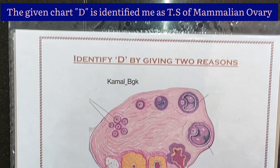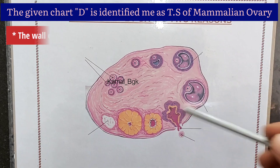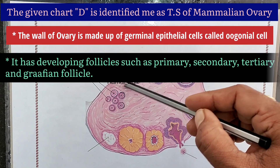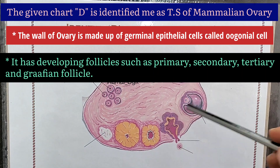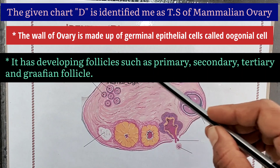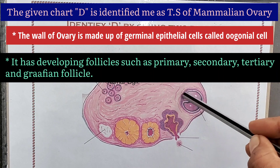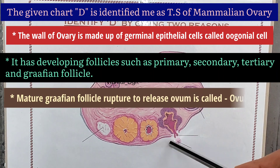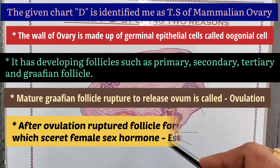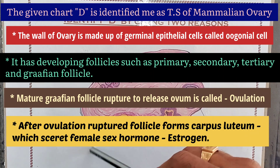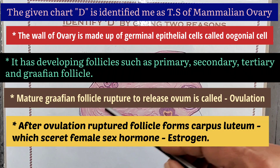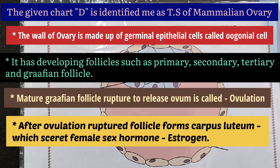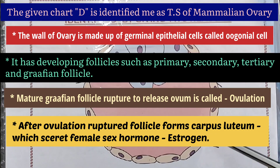The given chart D is identified as TSF mammalian ovary. The wall of ovary is made up of germinal epithelial cells called oogonial cells. It has developing follicles such as primary, secondary, tertiary, and Graafian follicles. The mature Graafian follicle ruptures to release the ovum, which is called ovulation. After ovulation, the ruptured follicle forms corpus luteum, which secretes female sex hormone called estrogen.